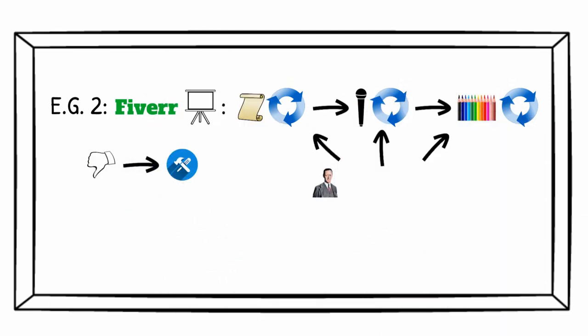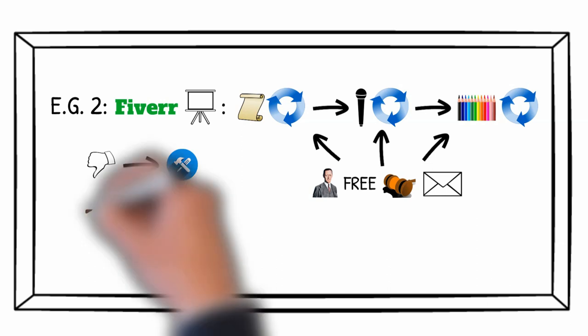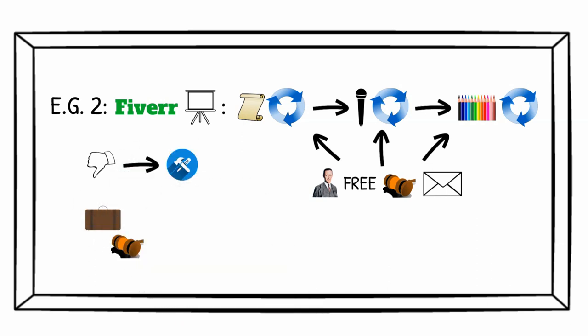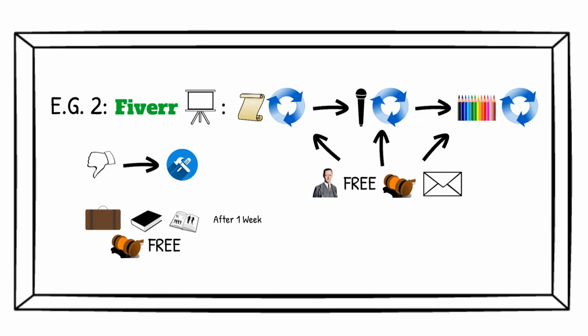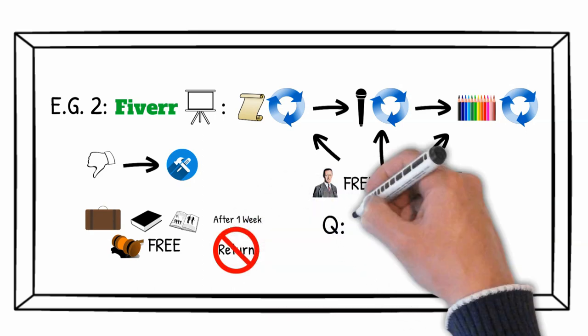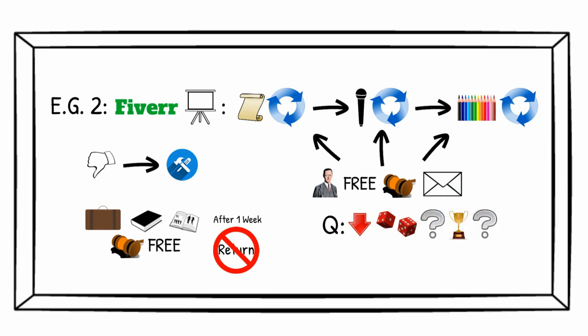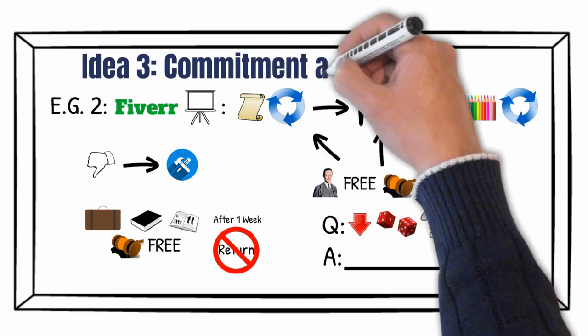This principle is based on Robert's inclusion of some sort of free trial in the great majority of his letters. For example, he sent bags to try for a week and asked for payment only after that. Books with the same trick, magazines and what have you, with the knowledge that once a person gets his hands on an item, he starts counting it as his own and it becomes more difficult to part with it. How will you reduce the risk for the buyer or give them a small win to attract them to your content? You may pause the video and answer this question now. Idea 3 is commitment and consistency.